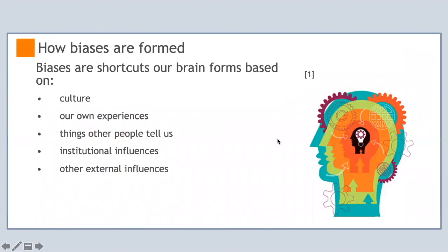Biases are shortcuts our brains form based on our culture, our experiences, things people tell us, institutional influences, and other external influences such as social media.